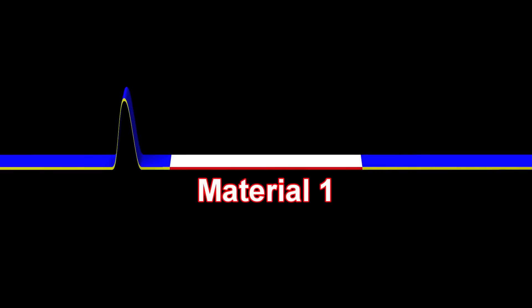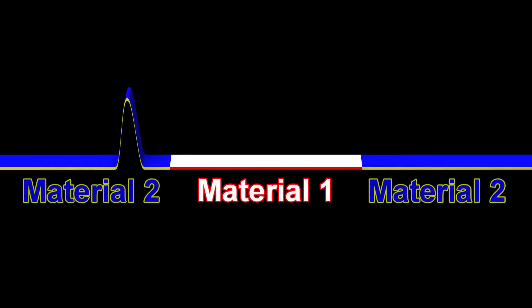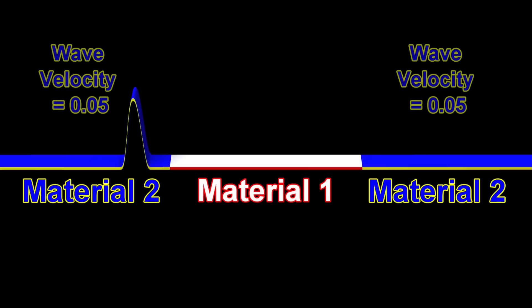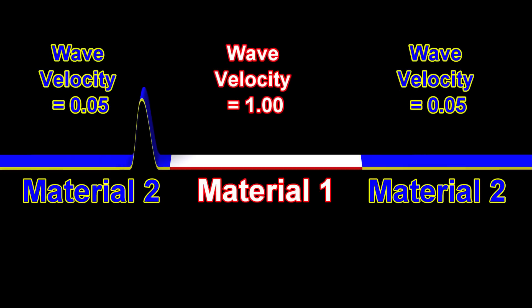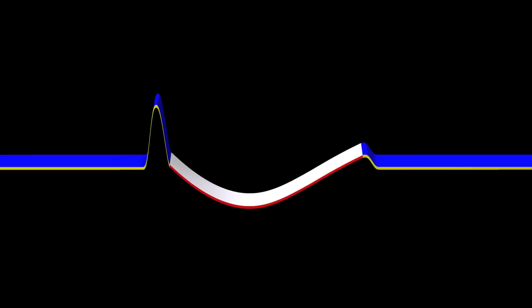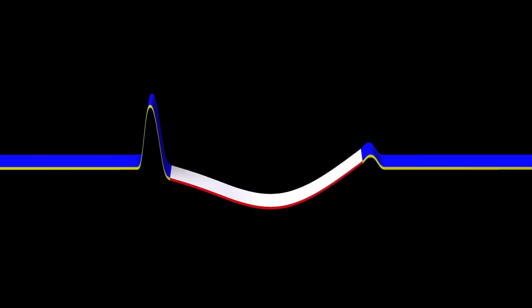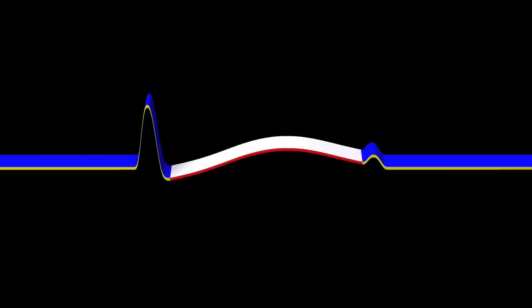Suppose we have two different types of materials, each with a different wave velocity. Each time a wave transitions into a material where the speed is different, a fraction of the wave is reflected back. The fraction of the wave that is reflected depends on the wave velocities inside the two materials.